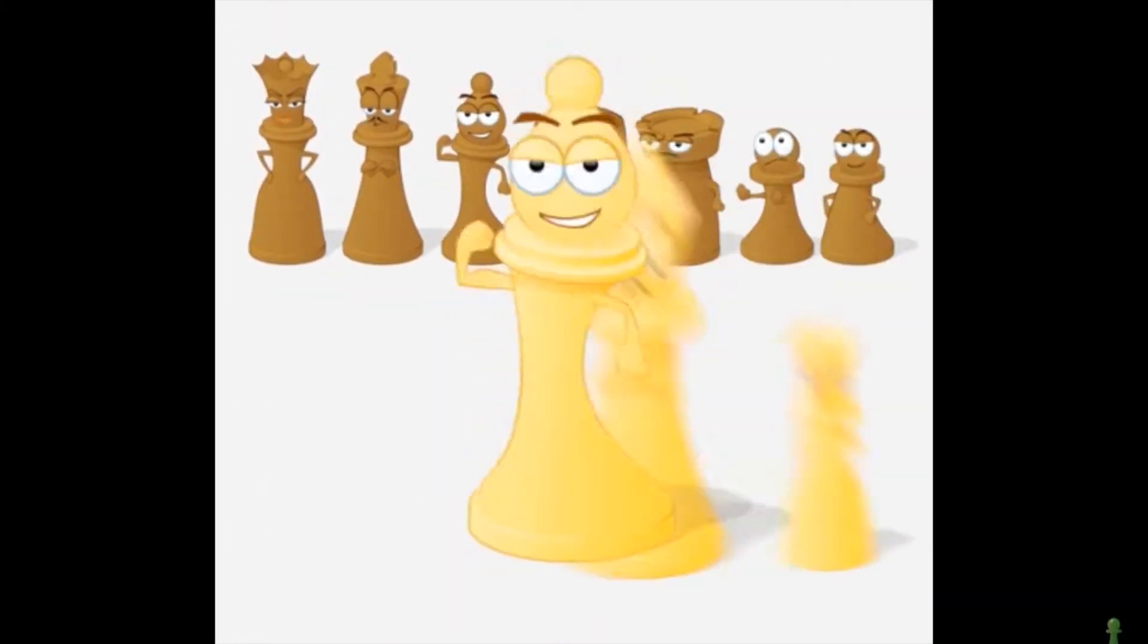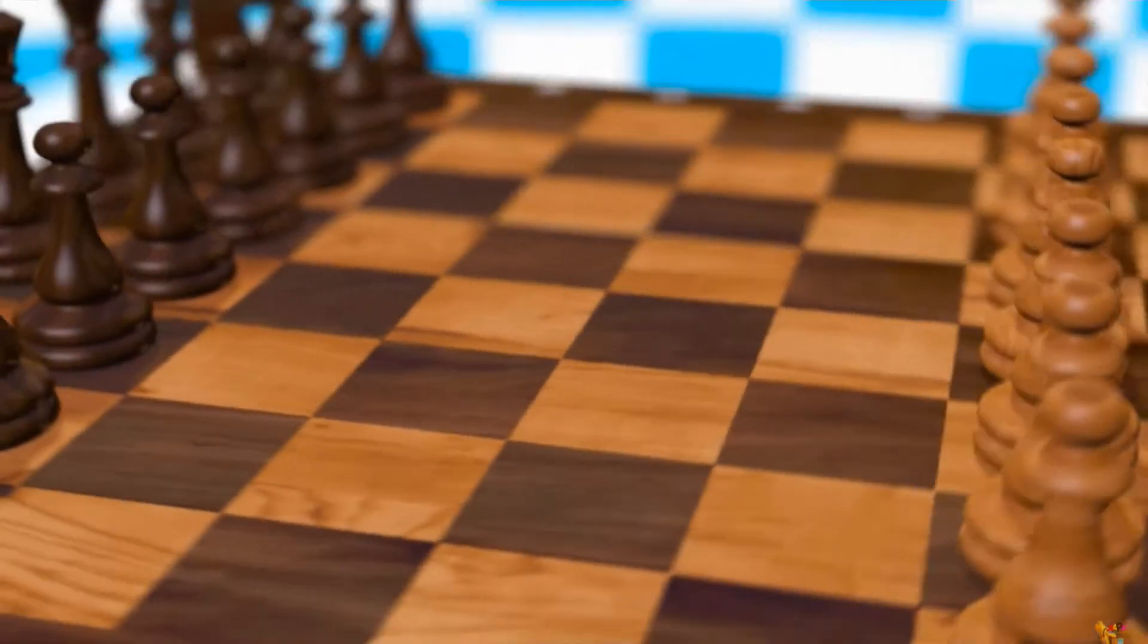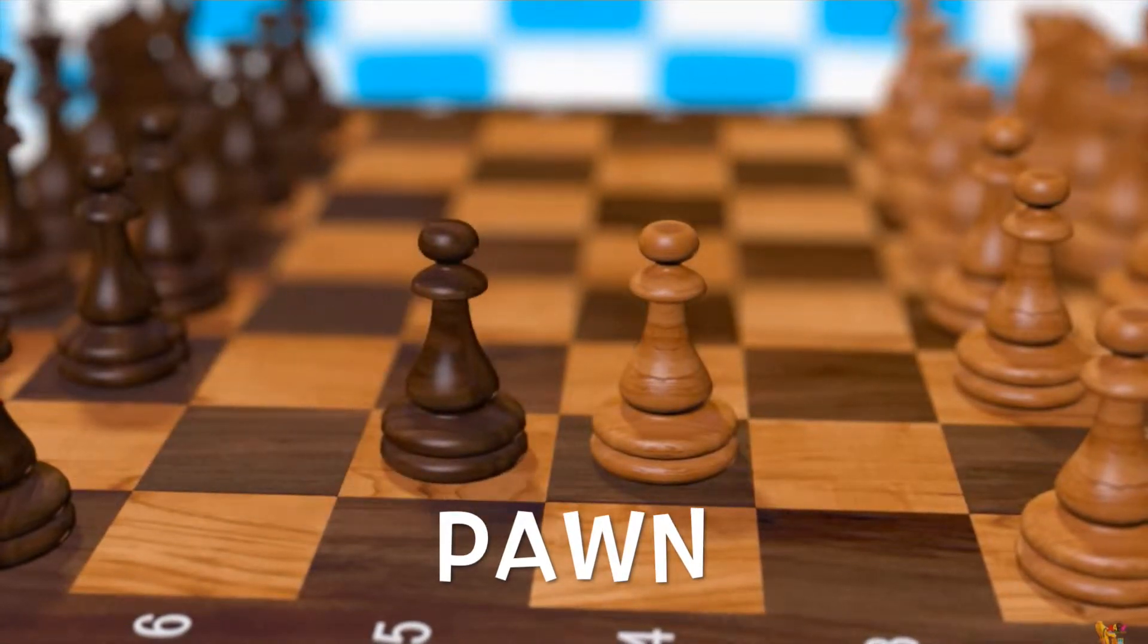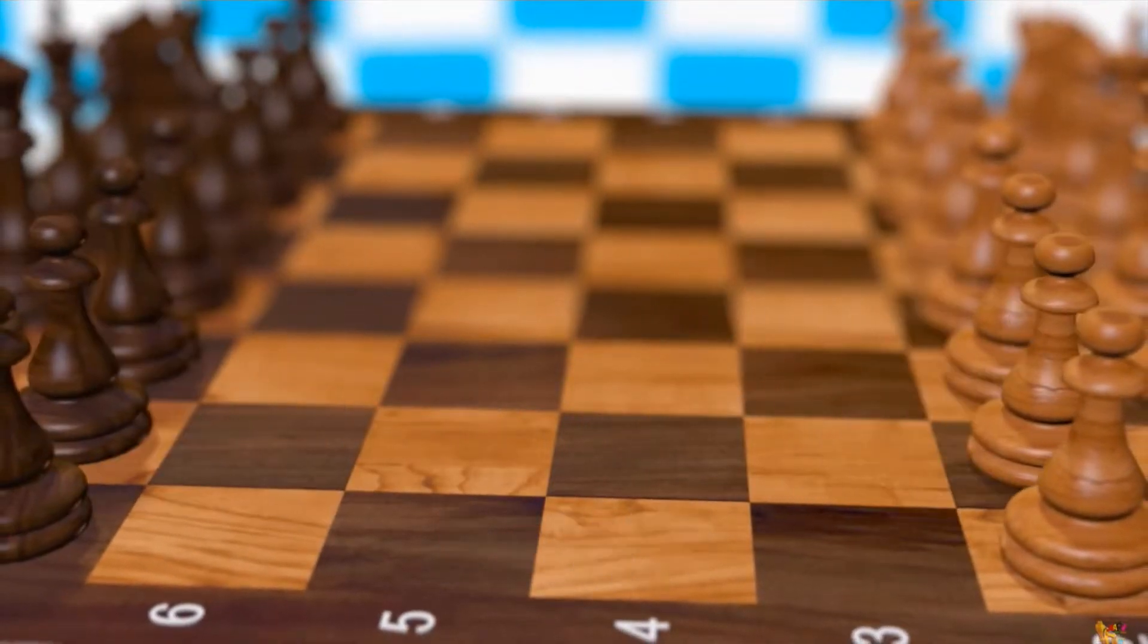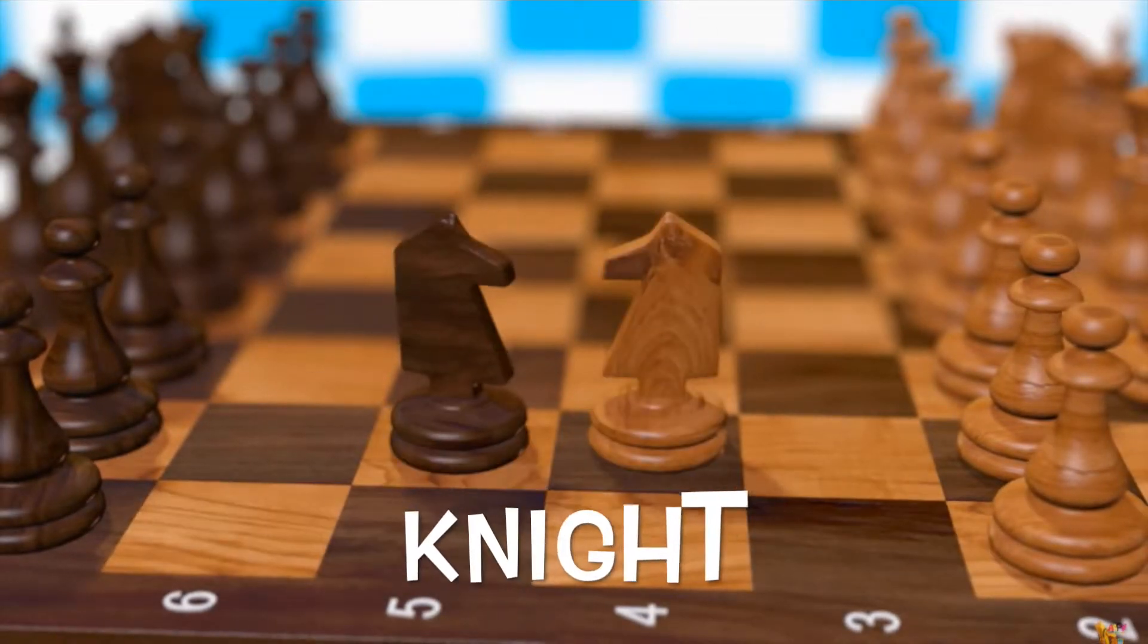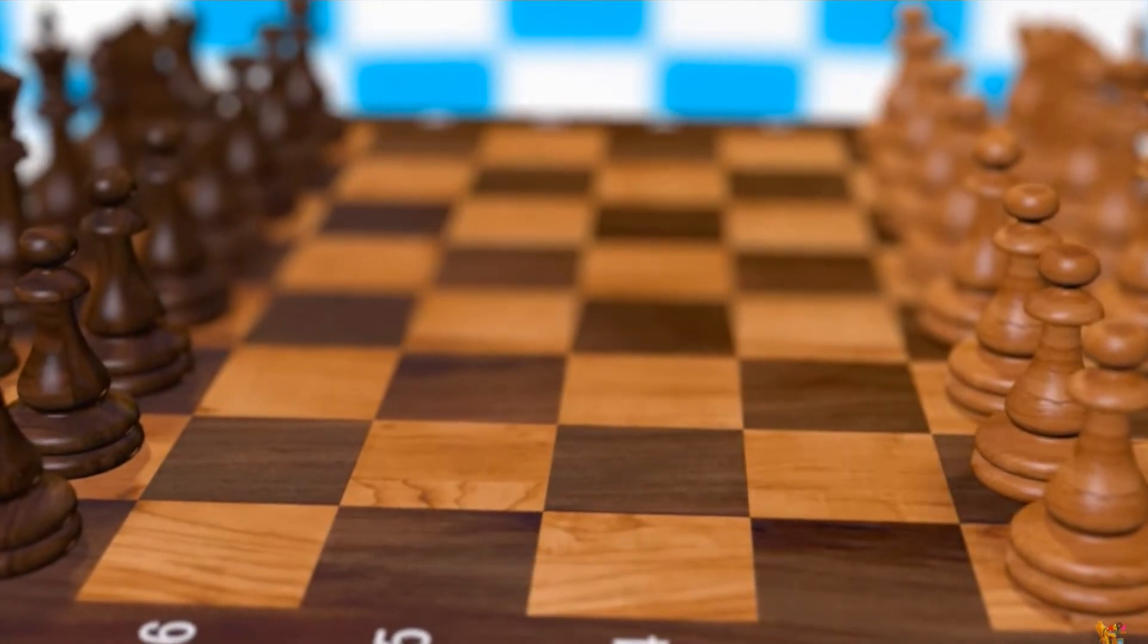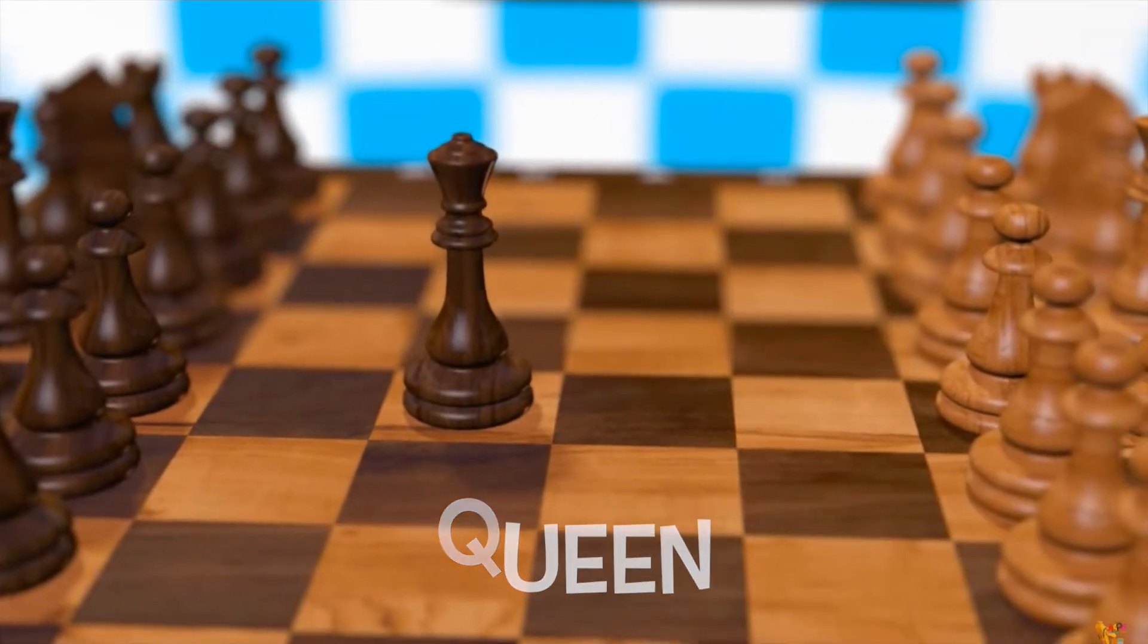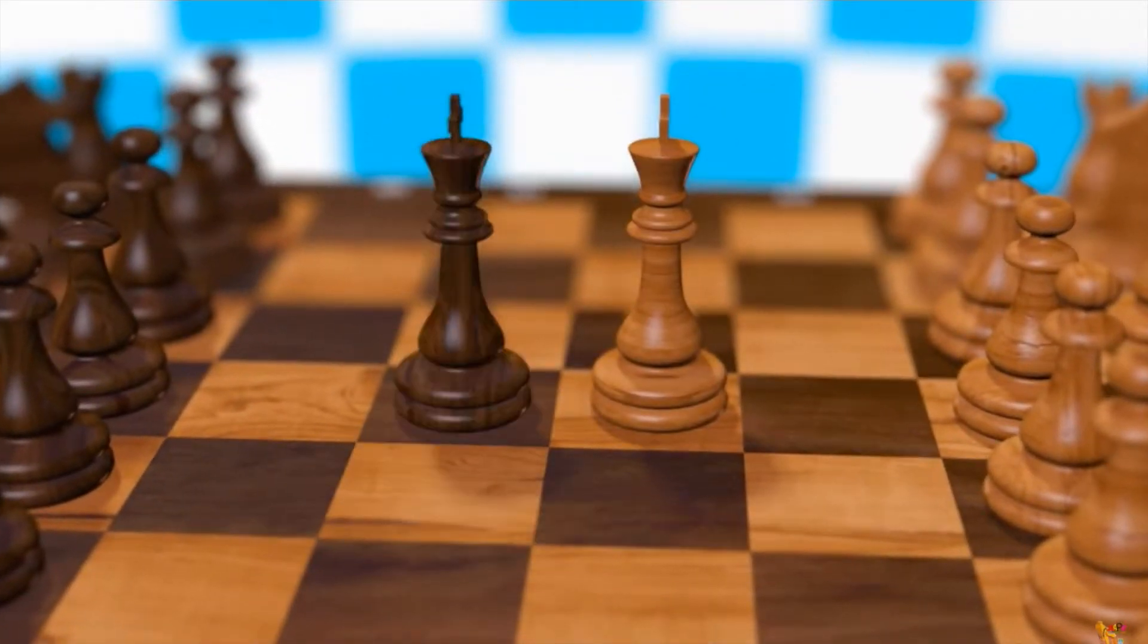Each player gets a bunch of different pieces that they use to try and go after the other player's king. Pieces are called pawn, rook, knight, bishop, queen, and the king.